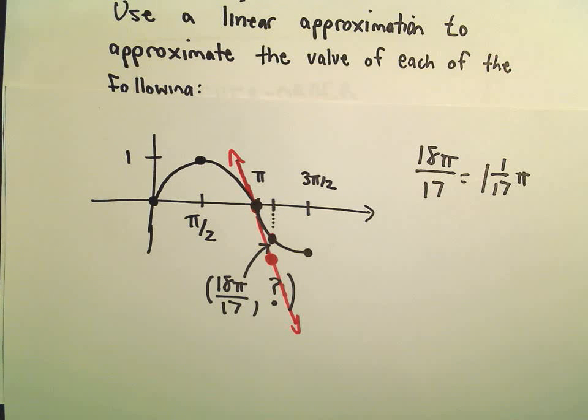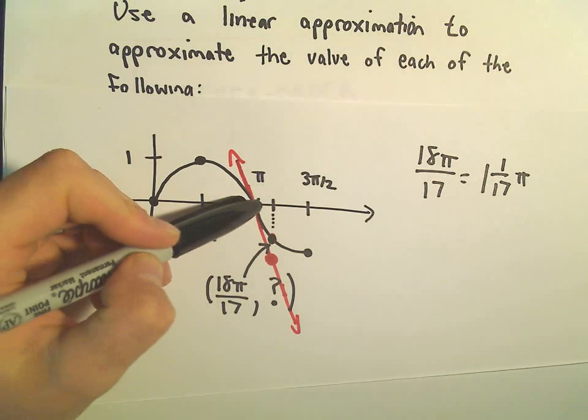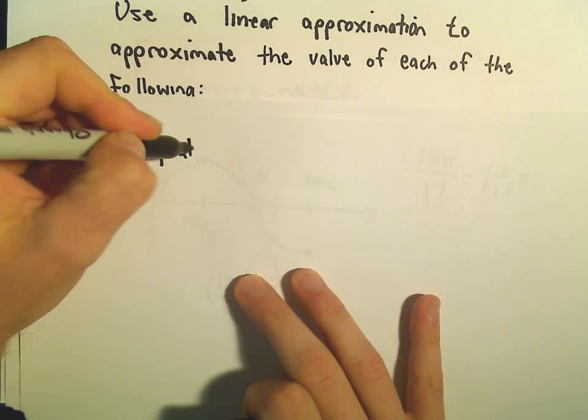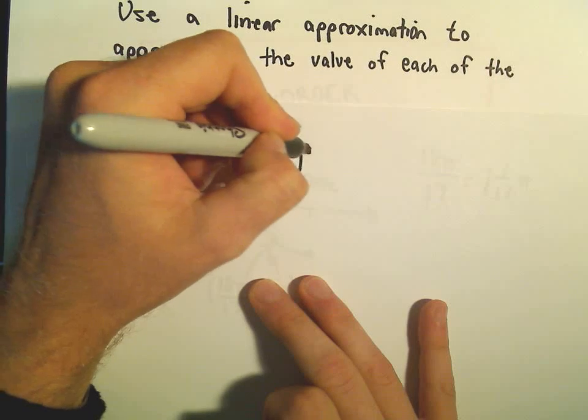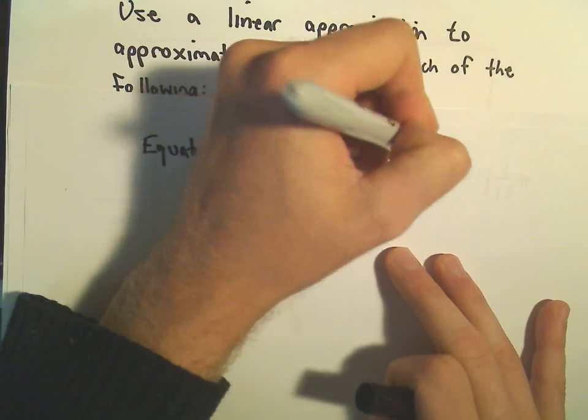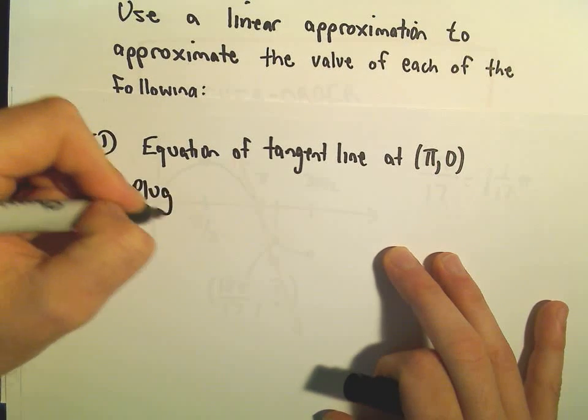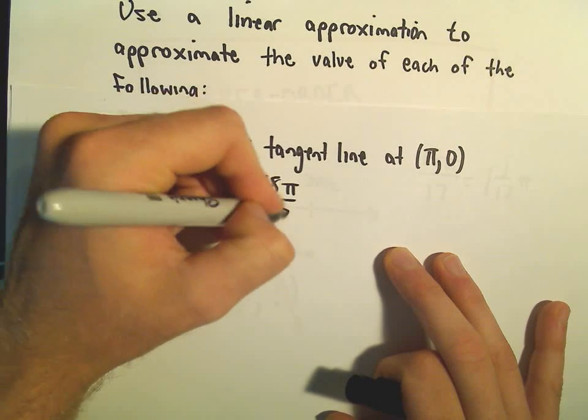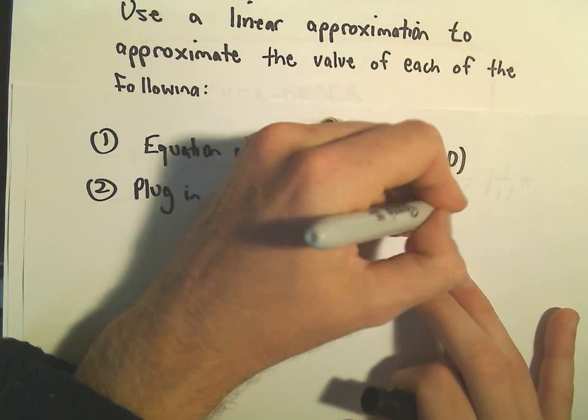So again, main idea. We're just going to find the equation of the tangent line at the point π comma 0. That'll be the first thing that we'll do, and then once we get that we'll plug in x equals 18π over 17 to approximate the true value.